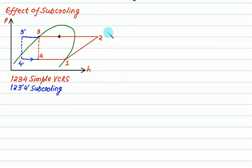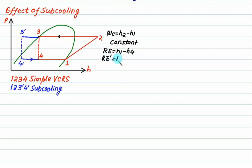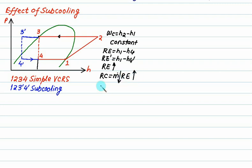Is there any change in the compressor work? The compressor work remains constant: W_C = h2 - h1. The refrigerating effect (RE) for the simple cycle is h1 - h4, and for the sub-cooling cycle it becomes h1 - h4-dash. This quantity increases, so RE increases. If RE increases, then for the same refrigerating capacity (RC = m-dot × RE), the mass flow rate will decrease, and the volumetric flow rate will also decrease.